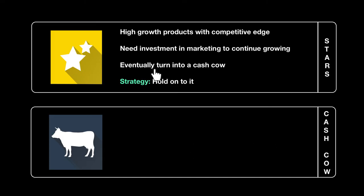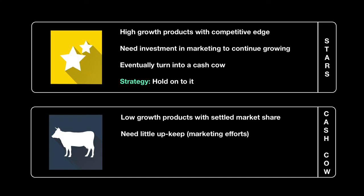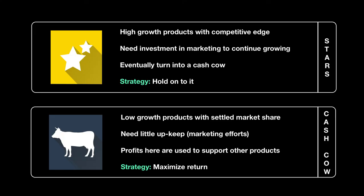A cash cow is what all star products eventually turn into. It has seen its heydays and real progress, and is now in a stable position — not seeing a significant fall in sales, but also not seeing great increases. It has low growth potential but a settled market share. It will need some marketing effort to keep customers reminded of its existence and maintain loyalty. All the money this cash cow brings in is used to develop and introduce new products and support marketing for other products — so as a business, you must maximize returns from it.